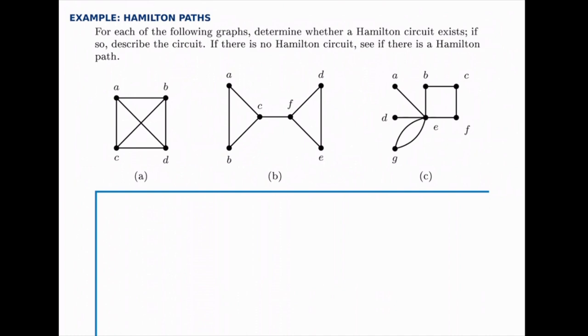For part A, we could probably just look at this and try tracing out a few examples to see if there is a Hamilton path. But also notice that that's a complete graph. It's K4, the complete graph with four nodes. And every complete graph has a Hamilton circuit.